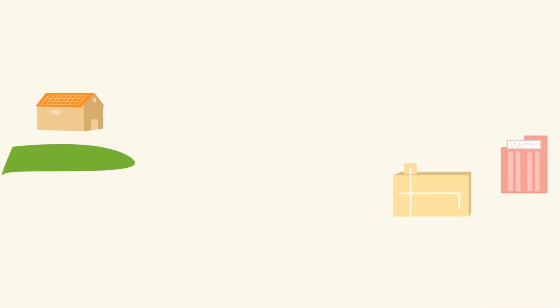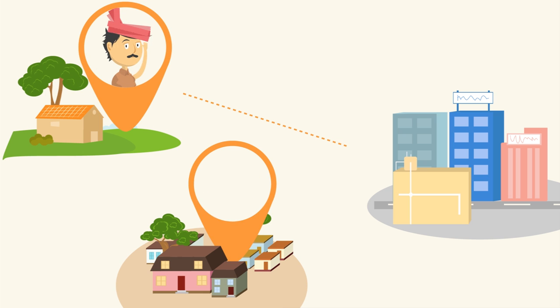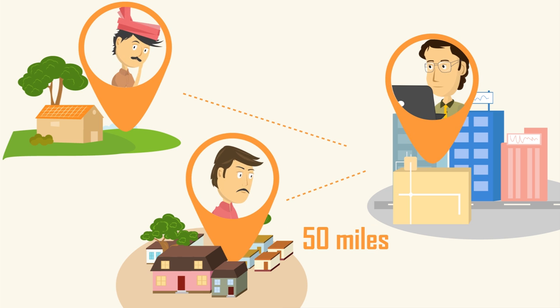an LCD TV dealer. Keshav and Vamsi live in the same village, while Sandeep lives in a city 50 miles away.